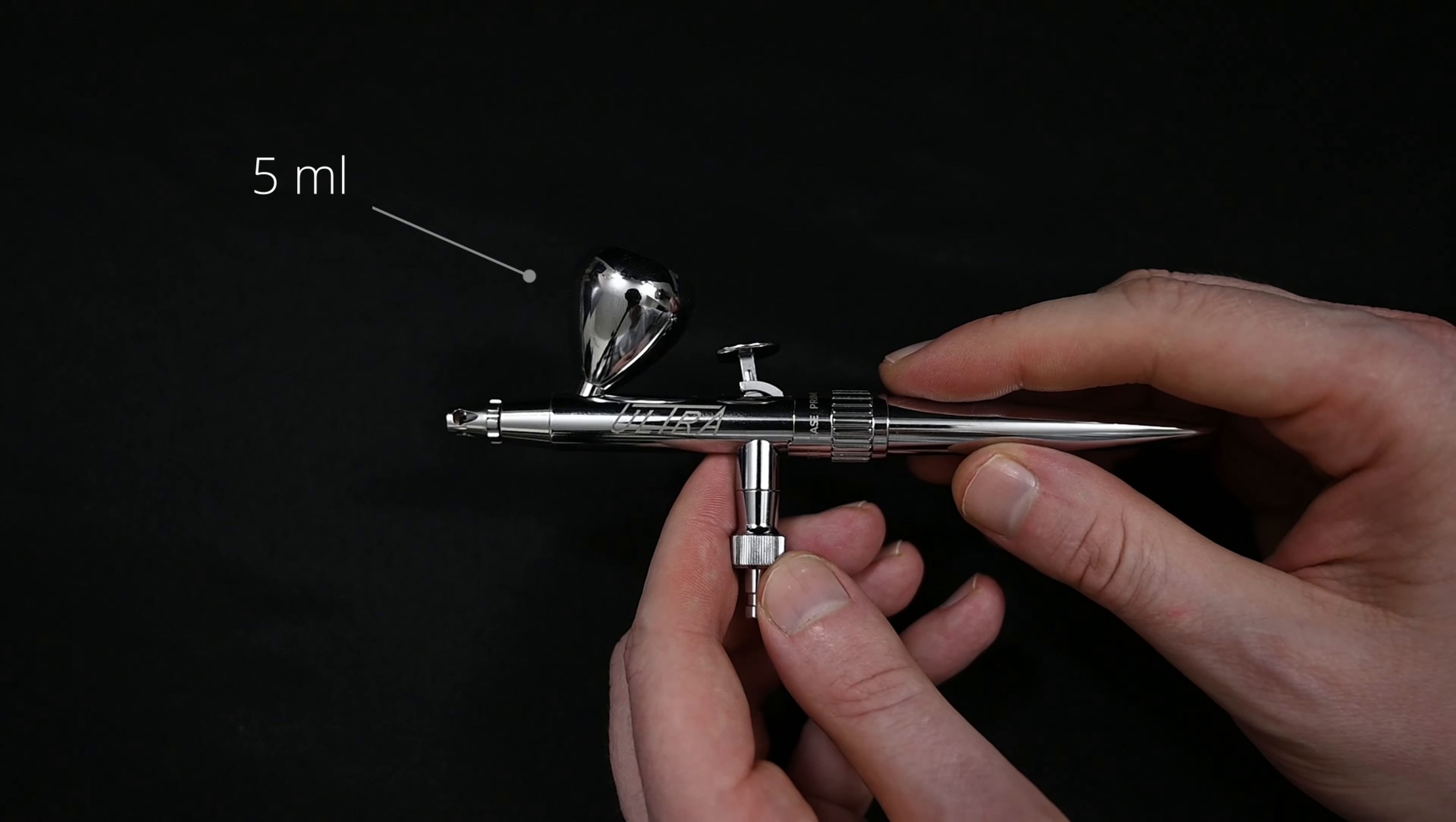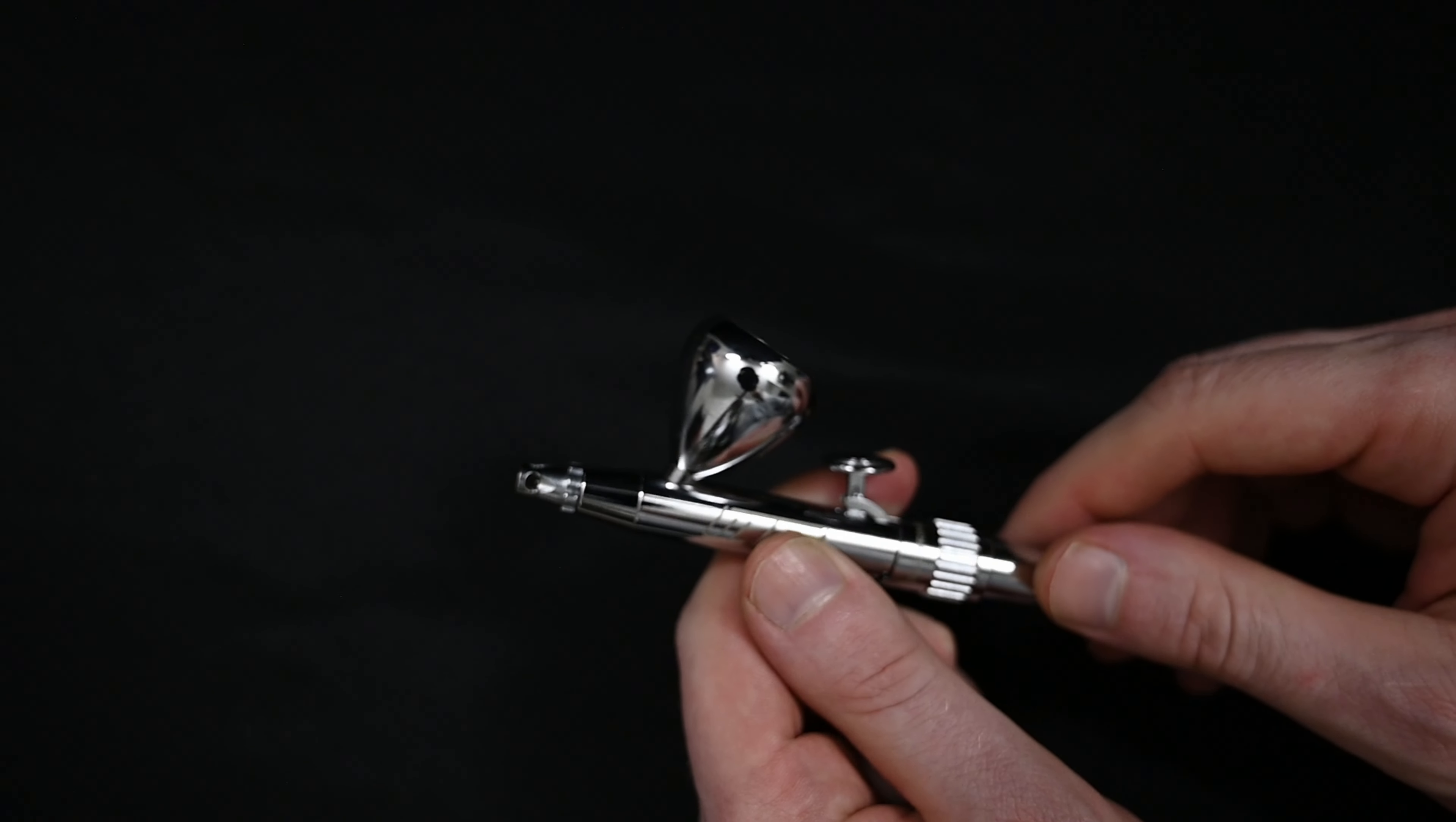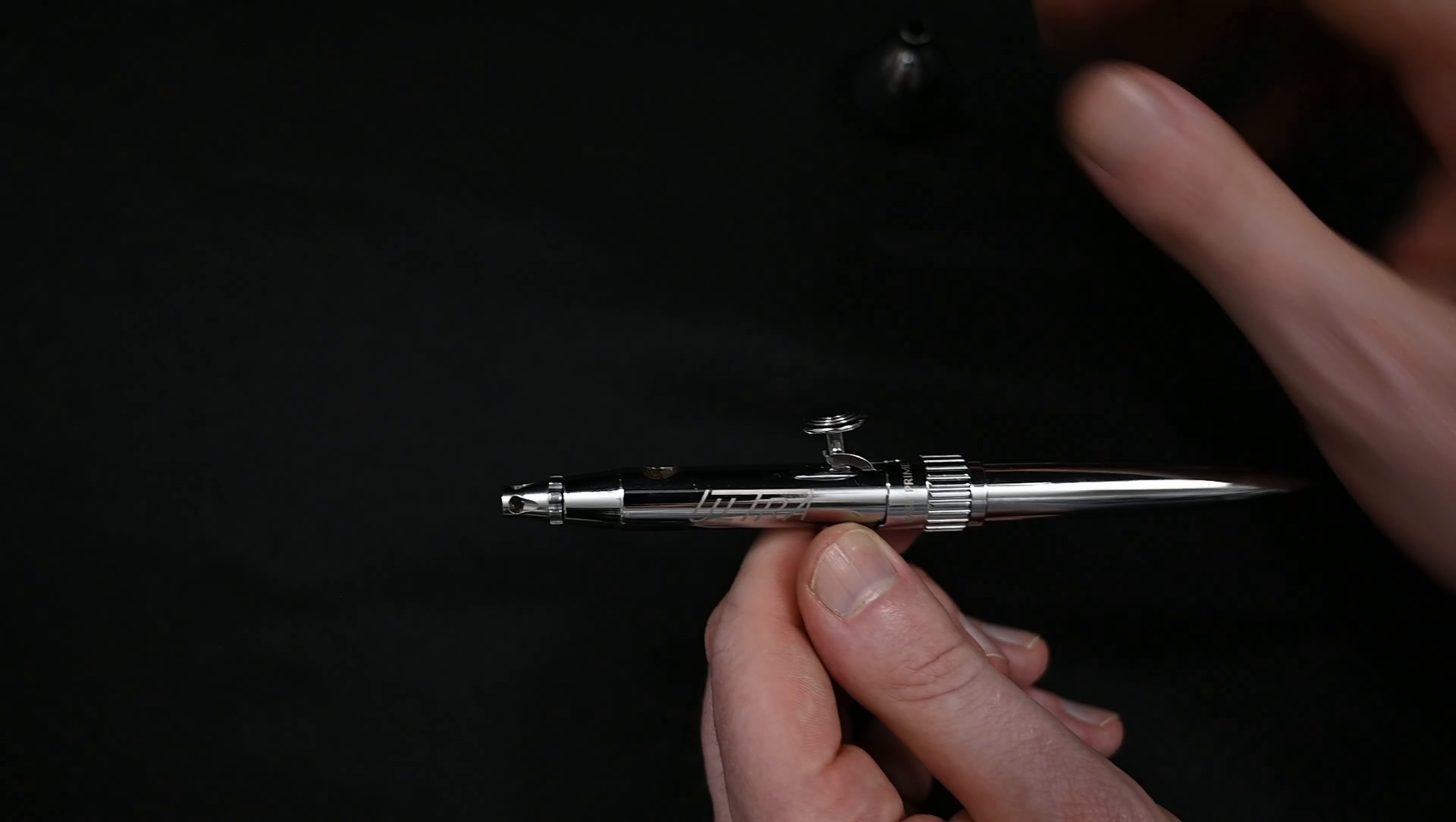The cup itself holds five milliliters of paint, which is quite a bit. And there's no threads, it doesn't screw in, it's just held in by compression. If you're worried that the cup may fall out if you knock it or tip the brush over, don't be, because this thing is solid. Once you install it on the airbrush, it's not going anywhere until you pull it back off.